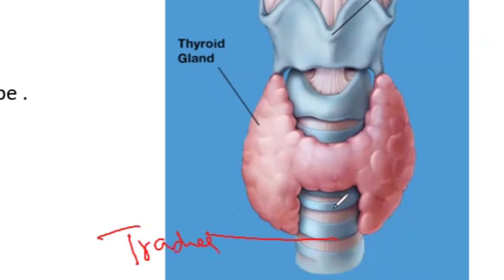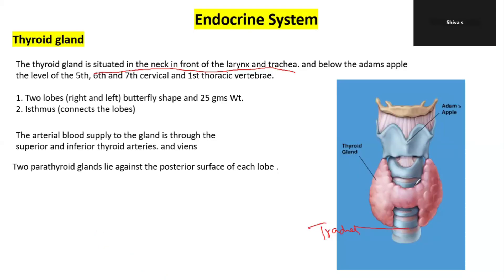This trachea is located in front of the larynx. It has a butterfly shape. Below the adams apple you can see this position — this is the adams apple, and I want to show you the exact location.